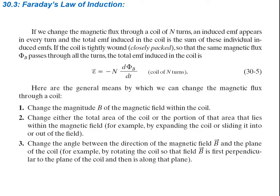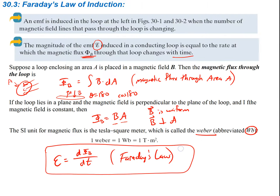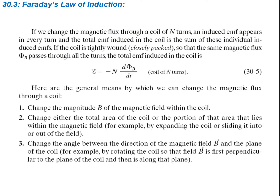If we change the magnetic flux through a coil of N turns, an induced EMF appears in every turn. The total EMF induced in the coil is the sum of these individual induced EMFs. If the coil is tightly wound so the same magnetic flux passes through each turn, then the total induced EMF is simply N times the derivative of the flux. This is Faraday's Law for a coil of N turns.